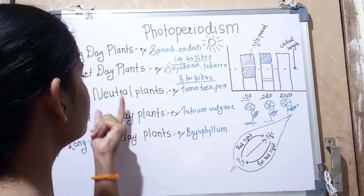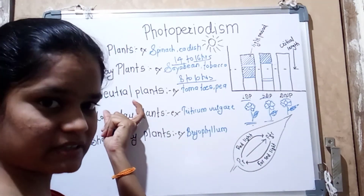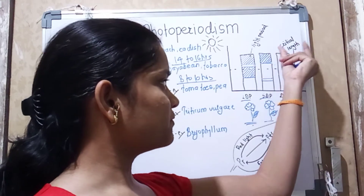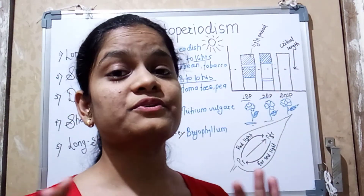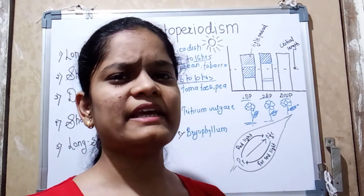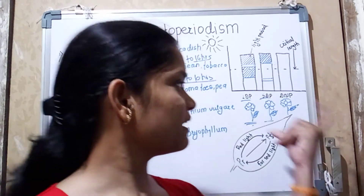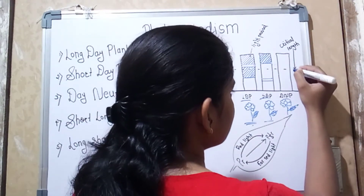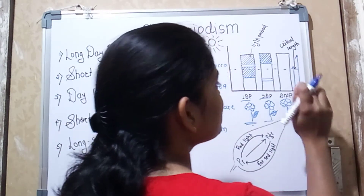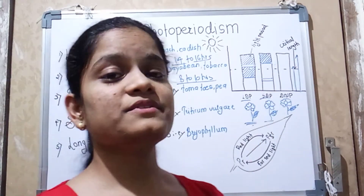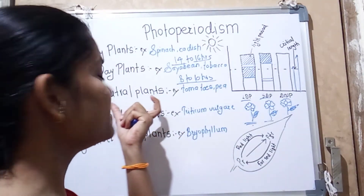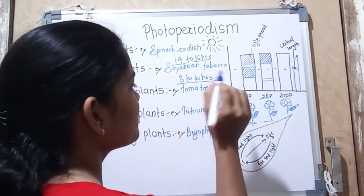The third category is the day neutral plant. As the name suggests, it is neutral — meaning these plants do not require any specific short day or long day duration. Day neutral plants produce their flowering in any day length condition, whether above or below the critical level. The length of day and night does not impact their flowering. Examples are tomato and peas.